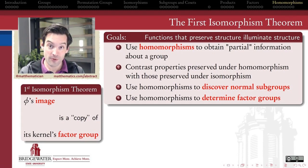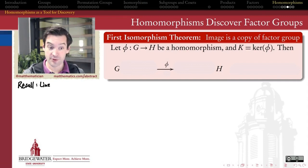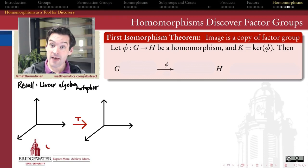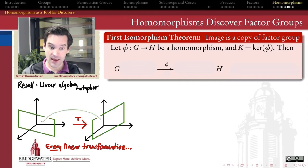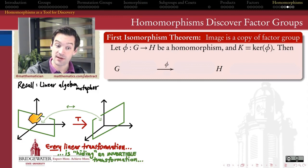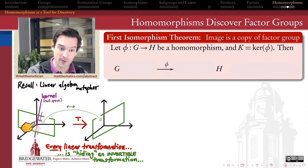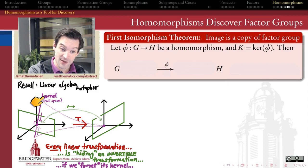We're going to return to the linear algebra metaphor to see where this thinking fits in the abstract algebra context. If I have a linear transformation from one vector space to another, every linear transformation is secretly hiding an invertible linear transformation inside itself. The invertible transformation associates the row space in an invertible way onto the column space. To find it, we take the kernel — the null space, everything sent to the zero vector — and forget about it, turning the non-invertible transformation into an invertible one.